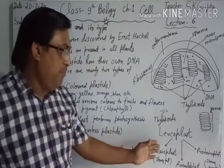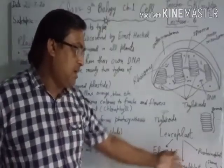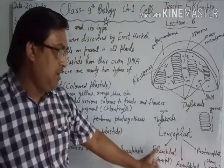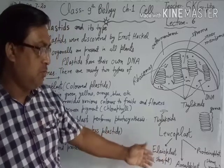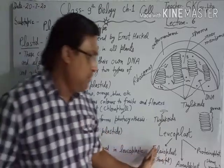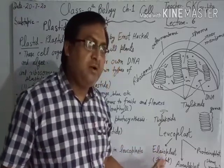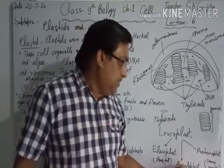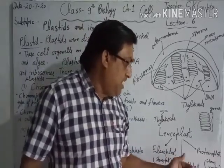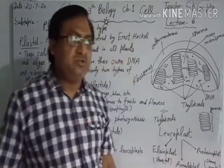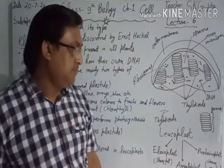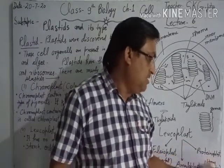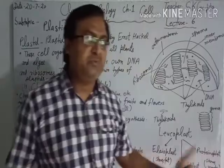There are many types of leucoplasts: Elaioplasts, which store fats and oils; Amyloplasts, which store starch; and Proteinoplasts, as the name suggests, store proteins.